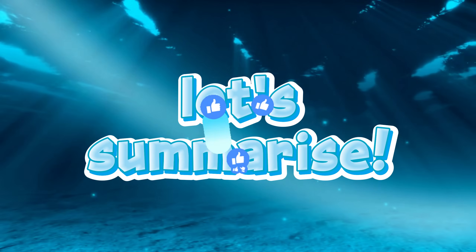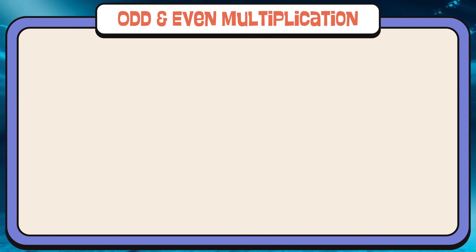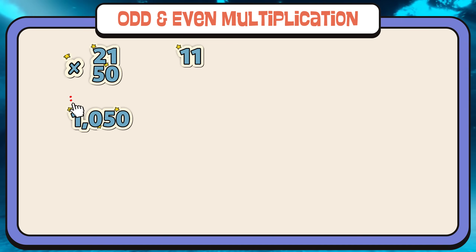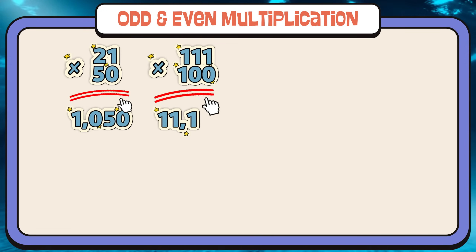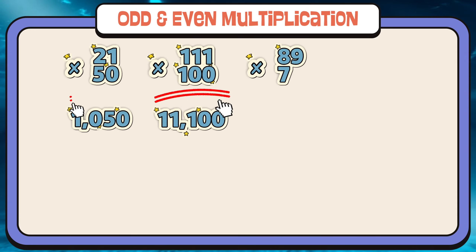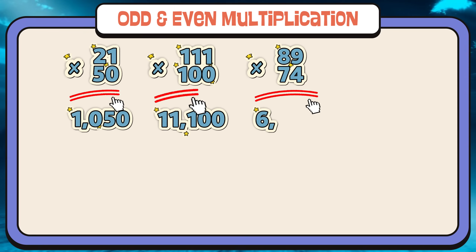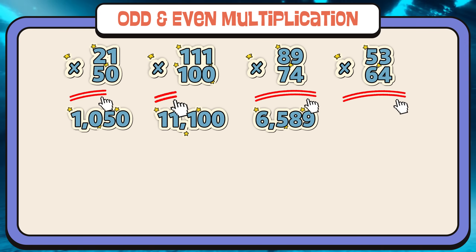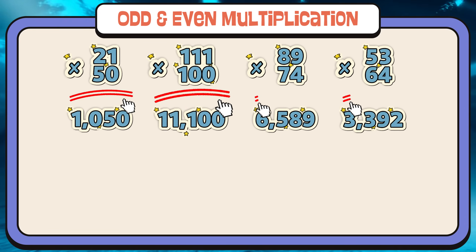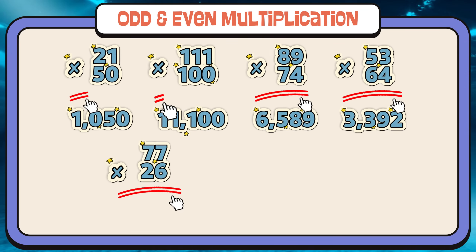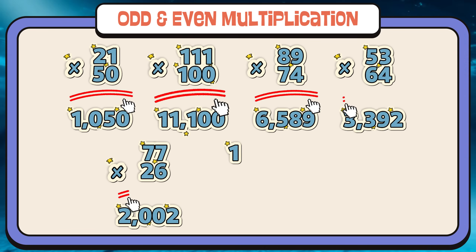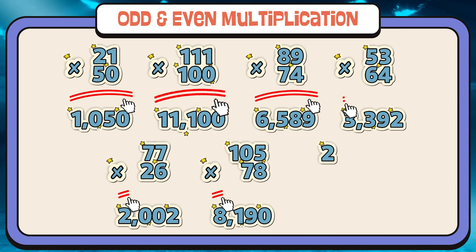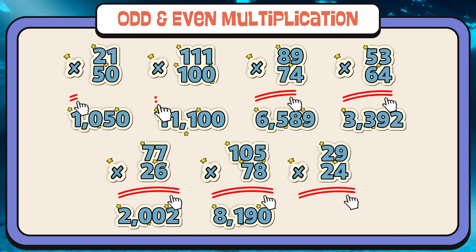Join me and let's summarize! Odd and even multiplication: 21 × 50 = 1,050; 111 × 100 = 11,100; 89 × 74 = 6,586; 53 × 64 = 3,392; 77 × 26 = 2,002; 105 × 78 = 8,190; 29 × 24 = 696.